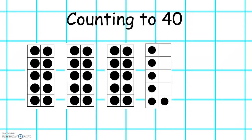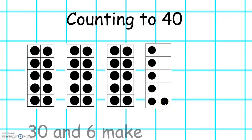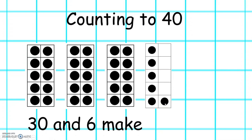Let's look at this one. We've got 10, 20, 30, 31, 32, 33, 34, 35, 36. So 30 and 6 make 36.